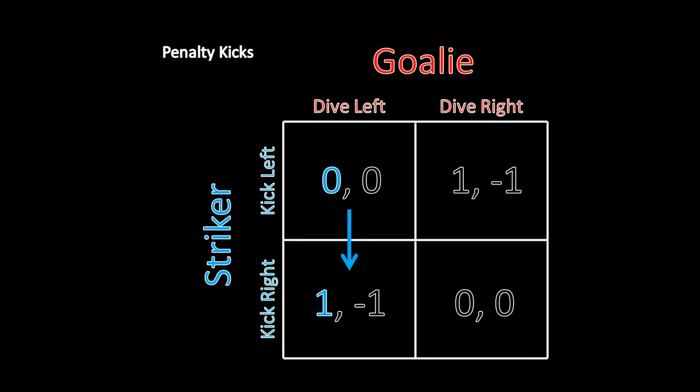We can't have a situation where the striker is kicking right and the goalie is diving right reliably either. If that were the case, the striker would want to kick left and score the goal. And we can't have a situation where the striker is reliably kicking left and the goalie is reliably diving right, because then the goalie would want to switch to diving left and stop that shot.